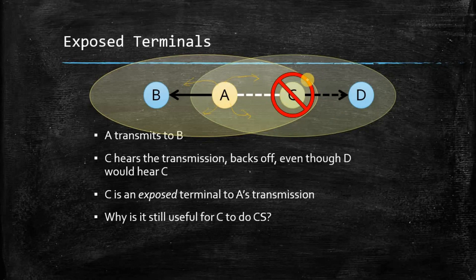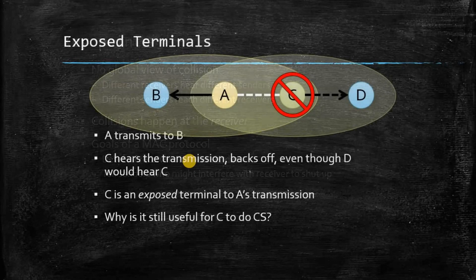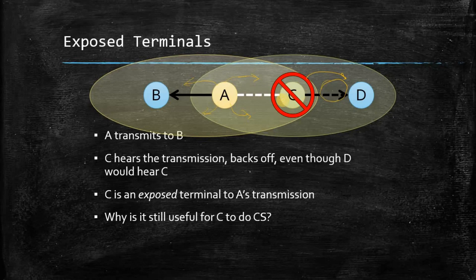Now, if C wants to send data to D, the medium between C and D is actually free. But C knows there is some transmission happening from A, so it waits for that transmission to complete before sending data to D. However, since the link between C and D is available, C should be allowed to send data to D immediately. This unnecessary waiting is called the exposed station problem — even though the medium is free, C doesn't send data. C is exposed to A's carrier sense, which prohibits it from sending data to D.